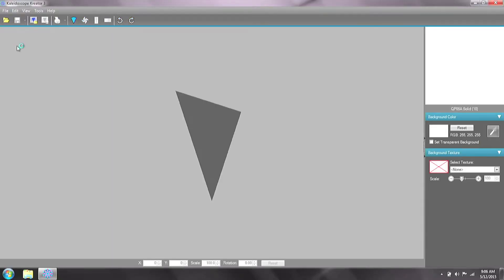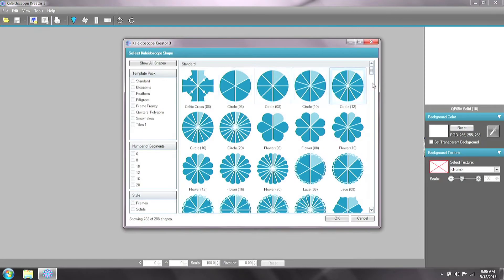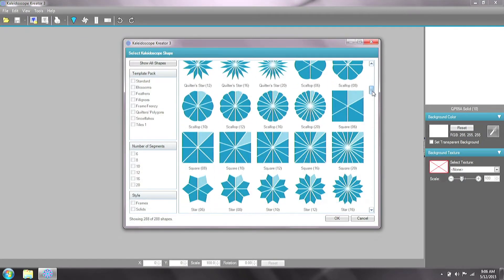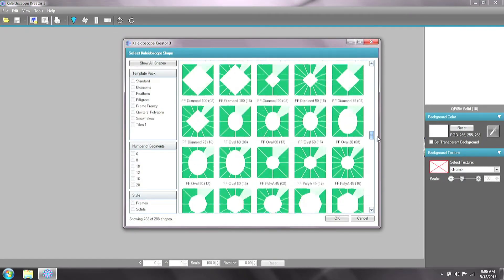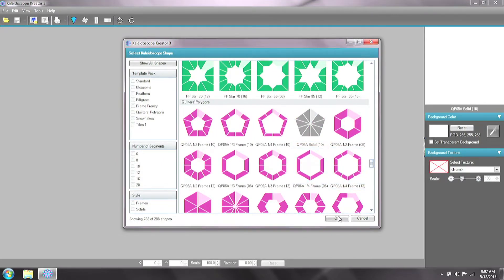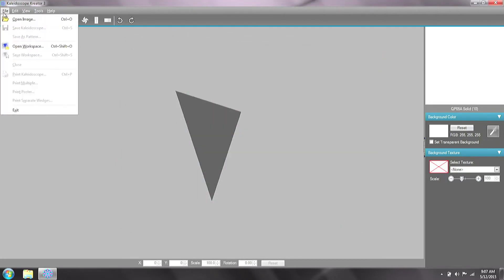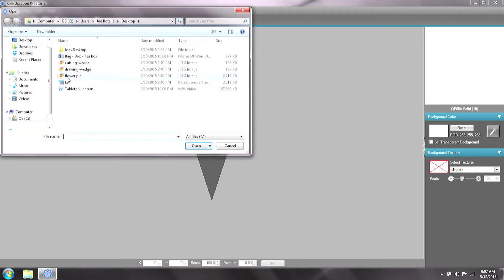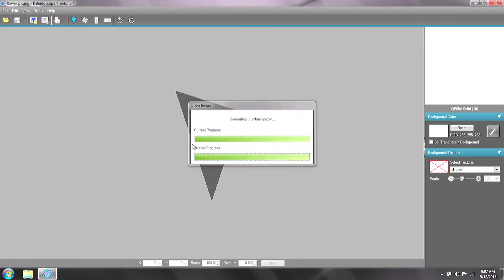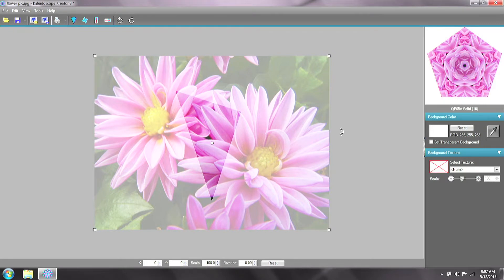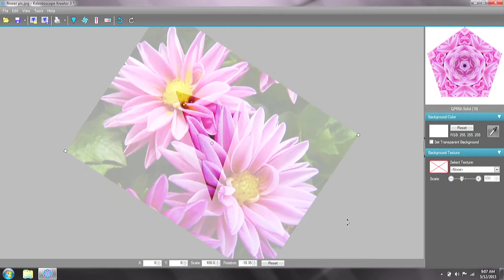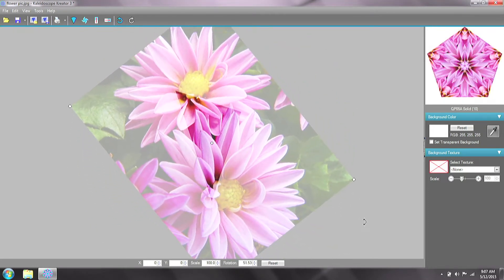So you just scanned it into your computer and you're bringing it into the software. The first thing we want to do is choose a pentagon shape. There's lots of shapes you can choose from. We'll pick that and then pull in the scan of our flower. Now the goal here is to rotate this and get it in a place where we'll have a beautiful kaleidoscope, and you can see it up in that preview window.